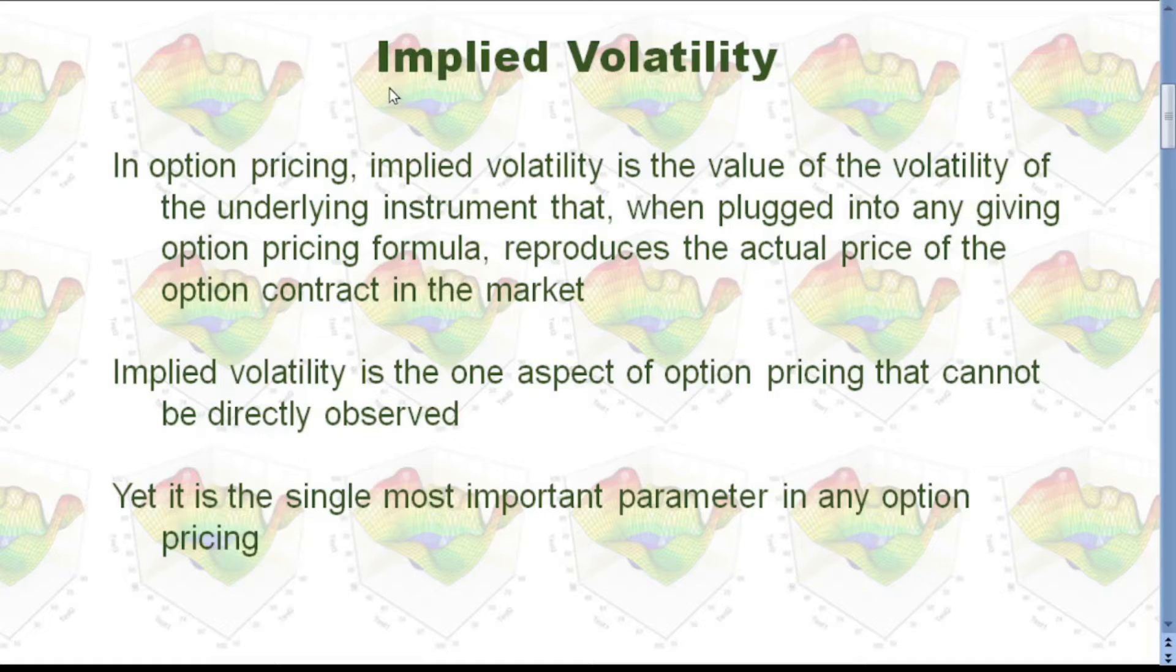But that volatility concept is different from implied volatility we are talking about here. In option pricing, implied volatility is the value of the volatility of the underlying instrument that, when plugged into any given option pricing formula, reproduces the actual price of the option contract in the market.